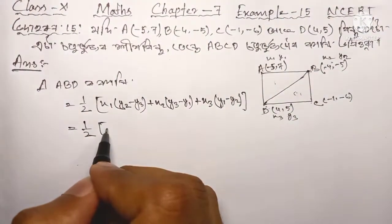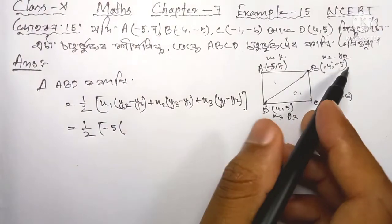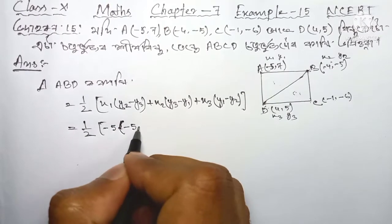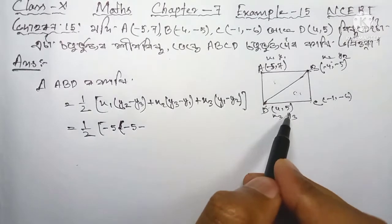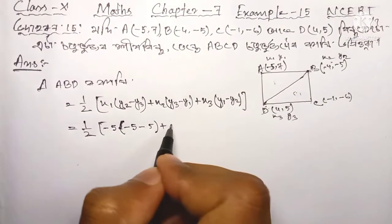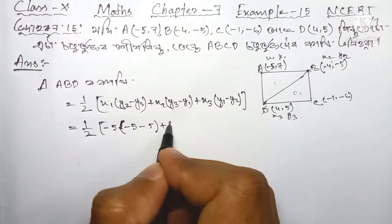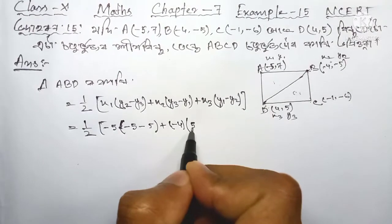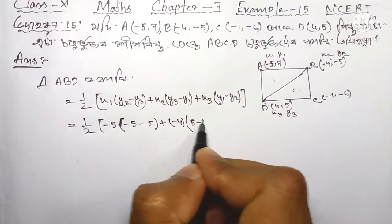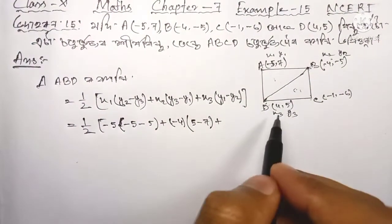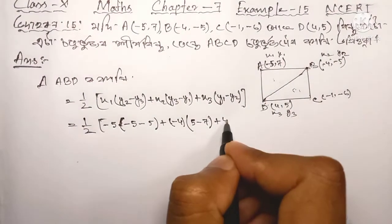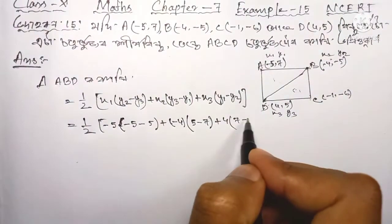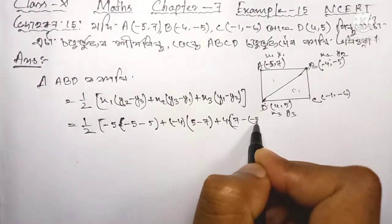Here x1 is minus 5, y2 is minus 5, so that gives us minus 5. y3 is 5. Then x2 is minus 4, into y3 which is plus 5, minus y1 which is 7. Plus x3 which is 4, into y1 which is 7, minus y2 which is minus 5.